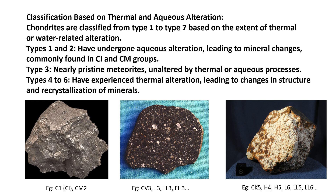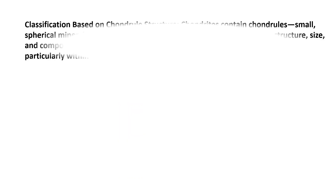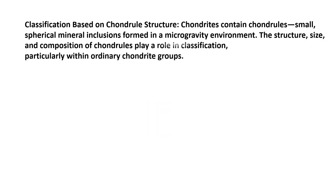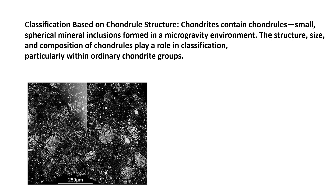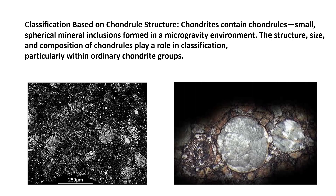Classification based on chondral structure: chondrites contain chondrules — small spherical mineral inclusions formed in a microgravity environment. The structure, size and composition of chondrules play a role in classification, particularly within ordinary chondrite groups. Classifying chondrite meteorites requires a combination of mineralogical, chemical and structural analyses for accurate results.